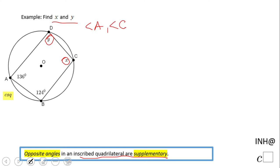So the measure of angle A plus the measure of angle C equals 180. That's the statement. Now looking here, we have 136 plus X equals 180. We're going to subtract 136 on both sides.